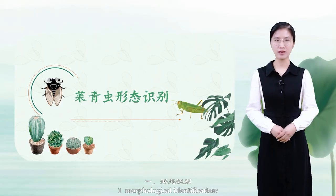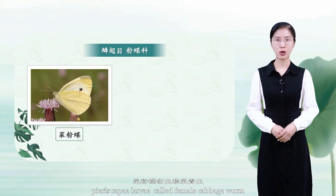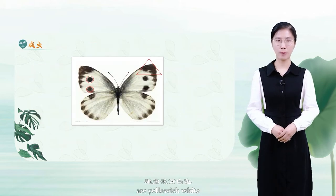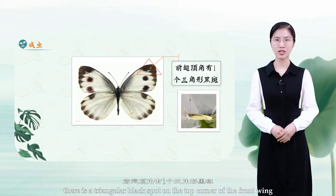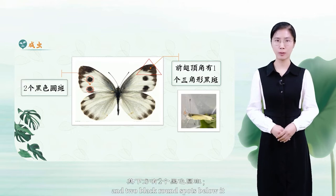One: morphological identification. Pieris rapae belongs to Lepidoptera. The larva, called the female cabbage worm, are yellowish white, and the base of the new wing is grayish black. There is a triangular black spot on the top corner of the front wing and two black round spots below it.